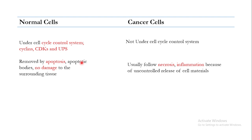When you talk about cancer cells, they usually undergo necrosis, which is not a programmed cell death. When they undergo necrosis, there is an uncontrolled release of cell material, and this uncontrolled release causes inflammation in the surrounding tissue. That inflammation then goes on to negatively affect the surrounding tissue.